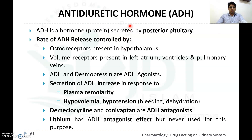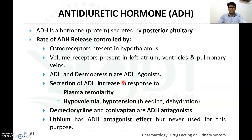One of the most important anti-diuretic drugs is anti-diuretic hormone (ADH), also known as vasopressin, secreted by the posterior lobe of the pituitary gland. The release of ADH is controlled by receptors including osmoreceptors in the hypothalamus and volume receptors in the left atrium, ventricles, and pulmonary veins. ADH and desmopressin are ADH agonists.